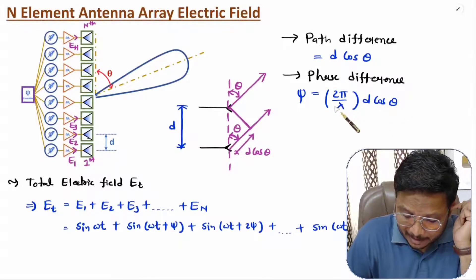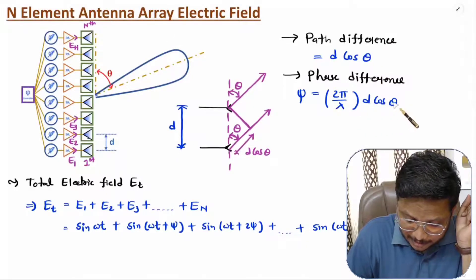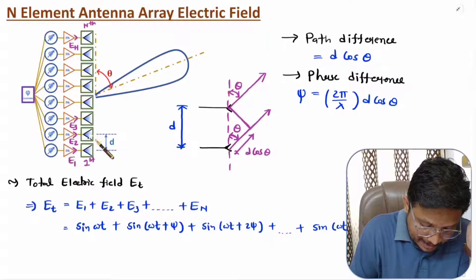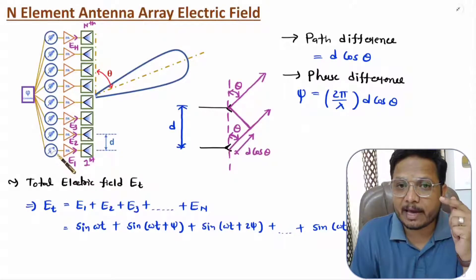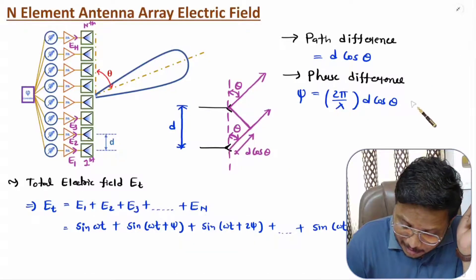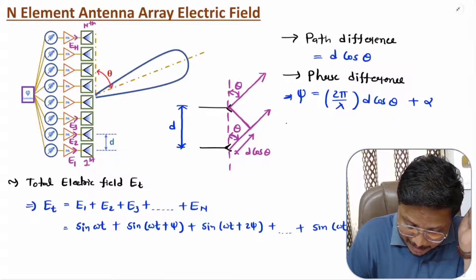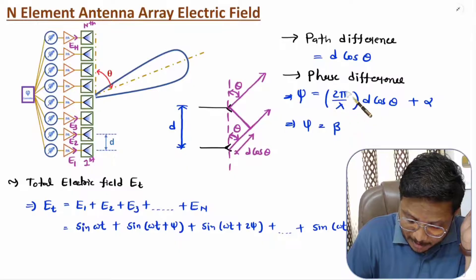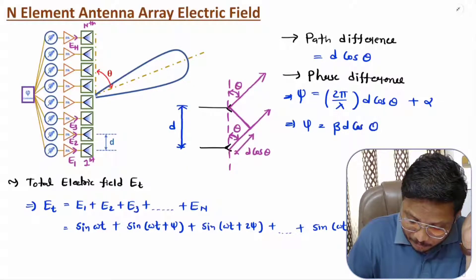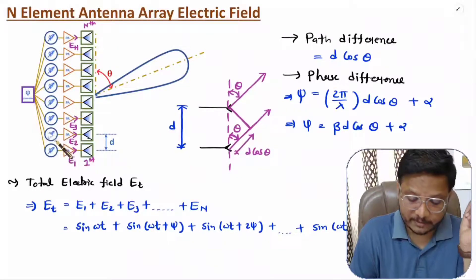If you want to have the phase difference, it can be calculated based on the path difference. For a path difference of lambda, the phase is 2π. So, for a path difference of d·cosθ, the phase difference is (2π/λ)·d·cosθ. Since the antenna elements are connected with a phase shifter, there is also the possibility of an initial phase alpha being added. So, the value of ψ is: ψ = (2π/λ)·d·cosθ + α, which can be written as ψ = βd·cosθ + α, where β = 2π/λ and α is the initial phase added by the phase shifter.